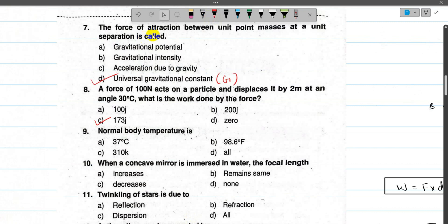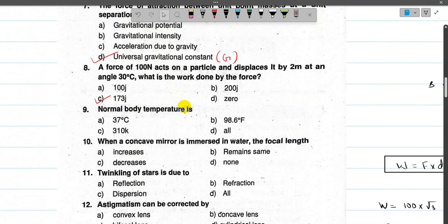Now number 9 is the normal body temperature. Normal human body temperature is 37 degrees Celsius, or 98.6 degrees Fahrenheit, or 310 Kelvin. So the answer is option D, all of the above.